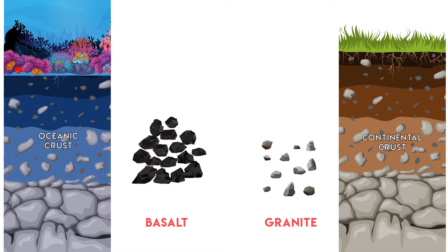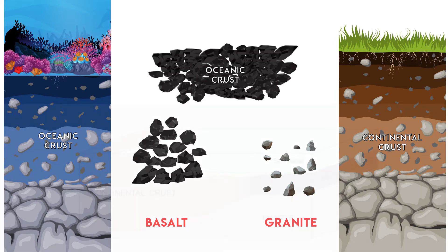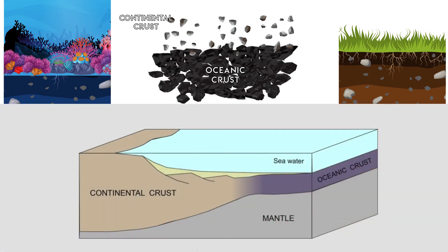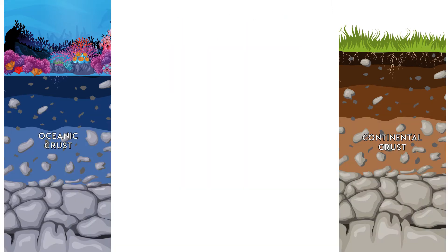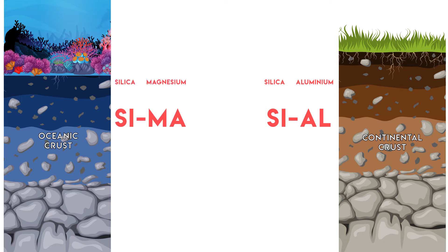Because of less density, you can consider that continental crust floats above the oceanic crust. Continental crust is mostly made of silica and aluminum and thus also called sial, whereas oceanic crust is called sima because it is made of silica and magnesium.